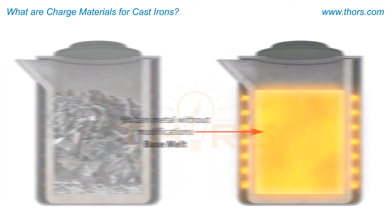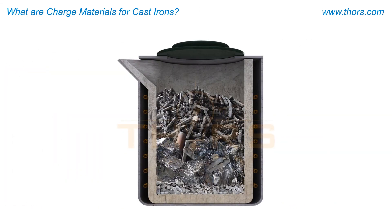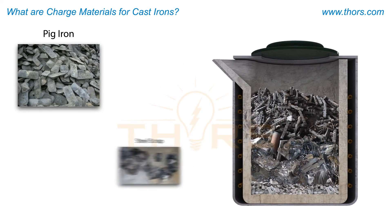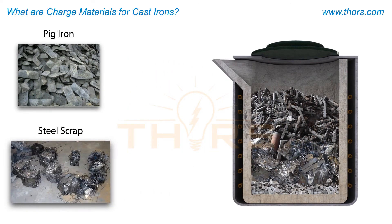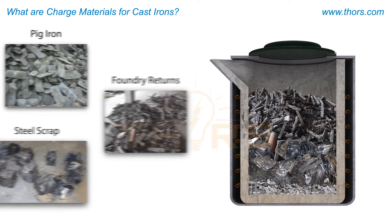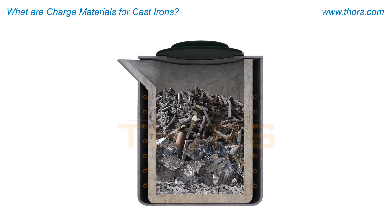The bulk of the charge material for cast irons consists of pig iron, steel scrap, and foundry returns. The addition of various alloying elements is then used to bring the chemistry closer to a specific target.